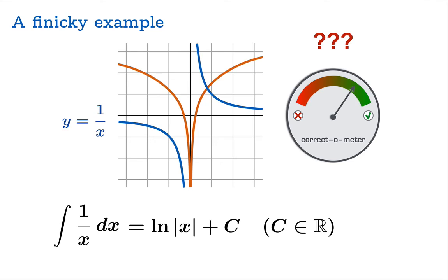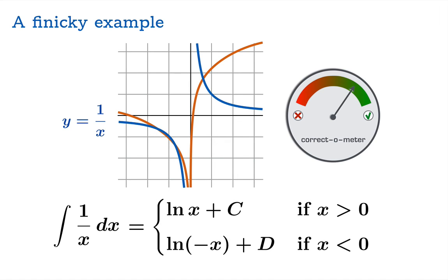Well, something very subtle is going on in this example. Because the domain of the function 1/x does not include x = 0, it turns out that you can add independent constants on each of the intervals from negative infinity to 0 and 0 to infinity. In other words, your most general antiderivative looks like this.